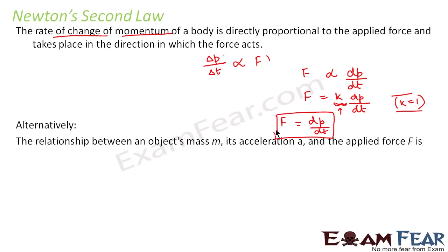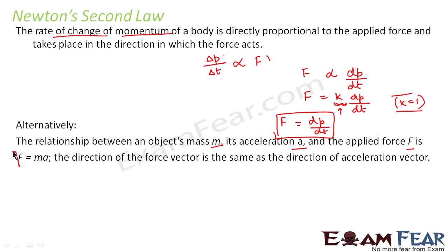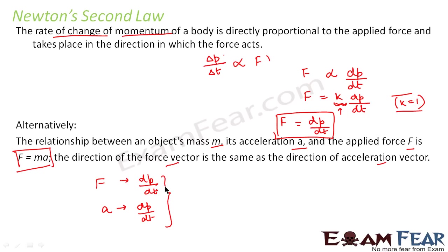The second law can alternatively be stated as the relationship between an object's mass m, its acceleration a, and the applied force F is F = ma. The direction of the force vector is the same as the direction of the acceleration vector.